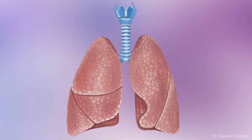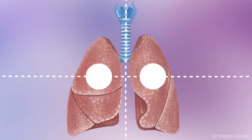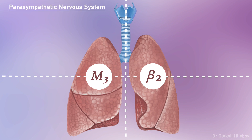In the lungs we have two major cholinergic and adrenergic receptor subtypes: M3 cholinergic receptors and beta-2 adrenergic receptors. M3 receptors are innervated by the parasympathetic nervous system and beta-2 adrenergic receptors are innervated by the sympathetic nervous system.